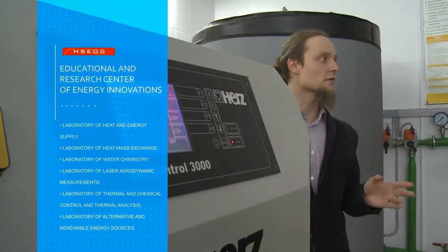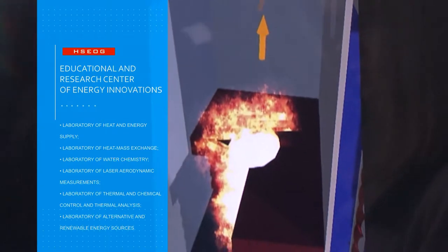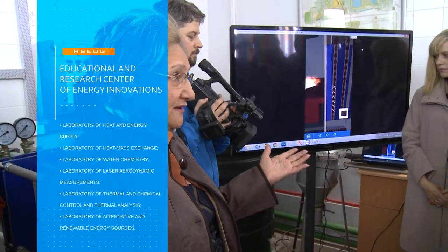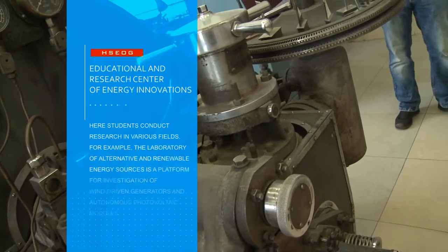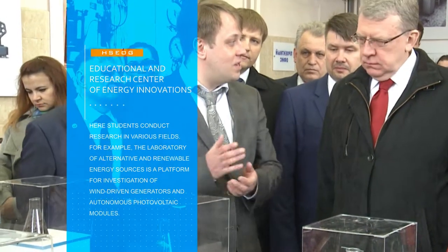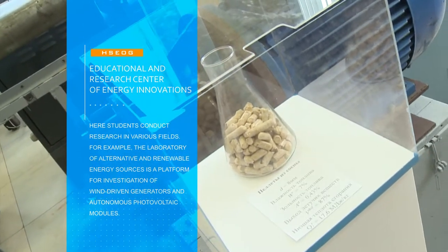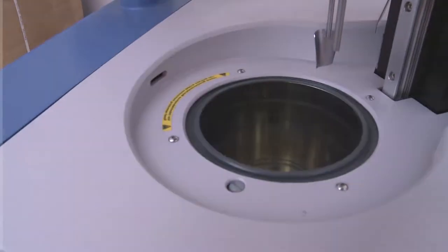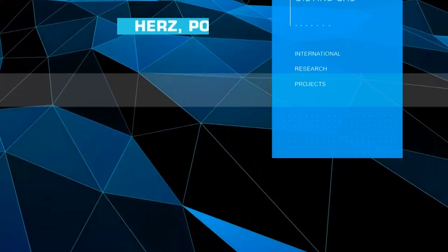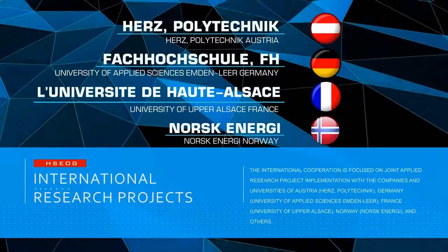Researchers from the Department of Thermal Power Engineering and Heat Engineering use the Center's equipment for energy analysis of heat generators, development of strategies for improving their technical, economical and environmental efficiency, elaboration of energy performance certificates for civil and industrial objects, consultations on the issues of wood-based biofuel production and by-products processing, performance of thermotechnical, granulometric, strength and other analysis of renewable and traditional fuel and energy sources. The international cooperation is focused on joint applied research project implementation with the companies and universities of Austria, Germany, France, Norway and others.